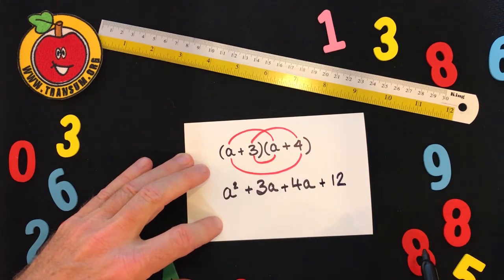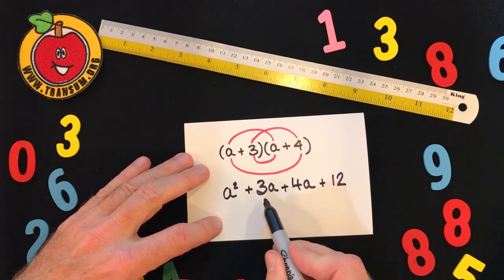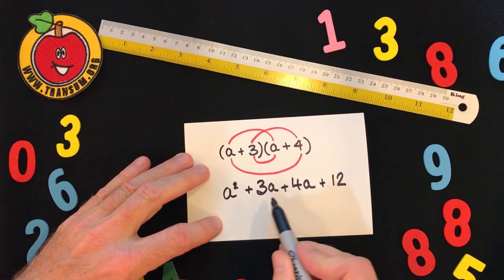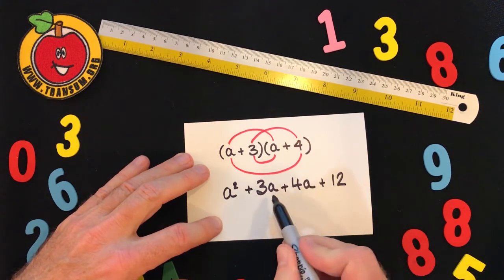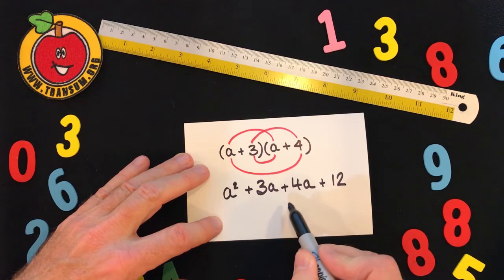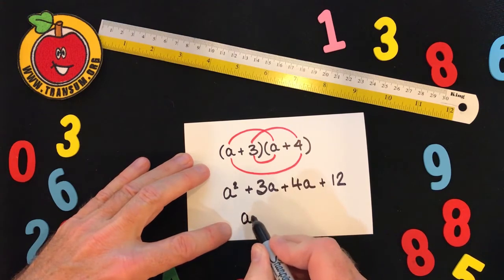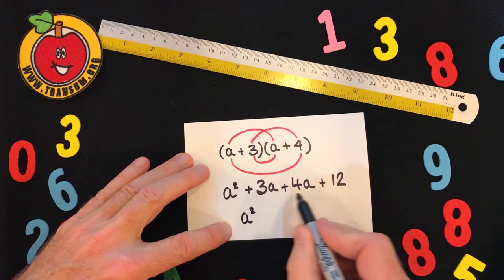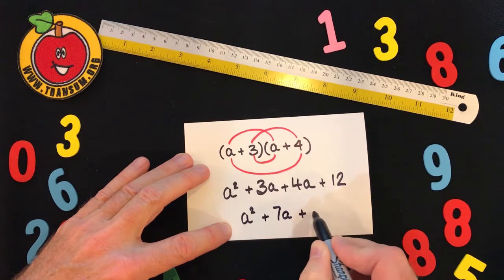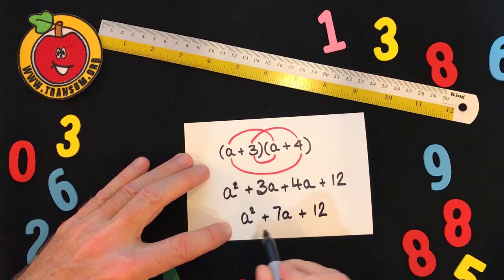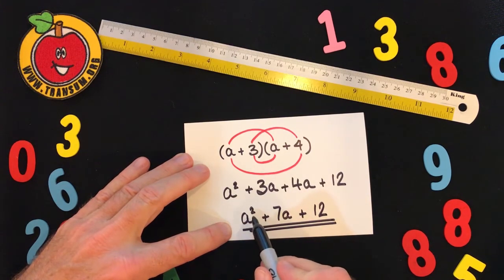The next thing we have to do is collect together like terms. The 3A and the 4A are what we call like terms, but A squared is quite different and so is the 12. So, combining the 3A and the 4A, altogether we've got A squared plus 7A plus 12. And that is what you'd type in for your answer, using the little button to help you type in that squared sign.